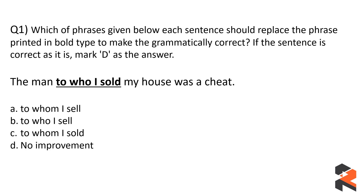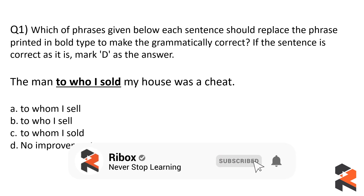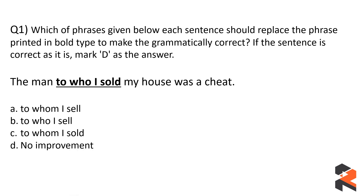It's easy to get confused and select option A because it appears first, but we have to stop and think. The person is talking about selling his house — he has already done it, so it's about the past, not the present or present perfect. The sentence 'The man to who I sold my house was a cheat' is wrong. The correct version is 'The man to whom I sold my house was a cheat.' So option C is the correct answer — 'whom' instead of 'who,' and 'sold' instead of 'sell' because we are talking about the past.